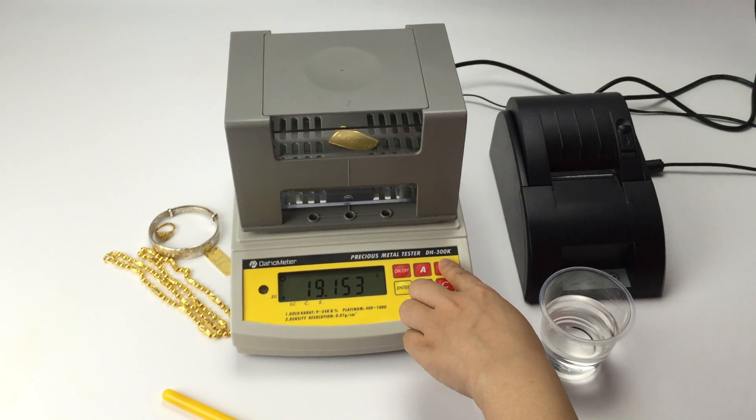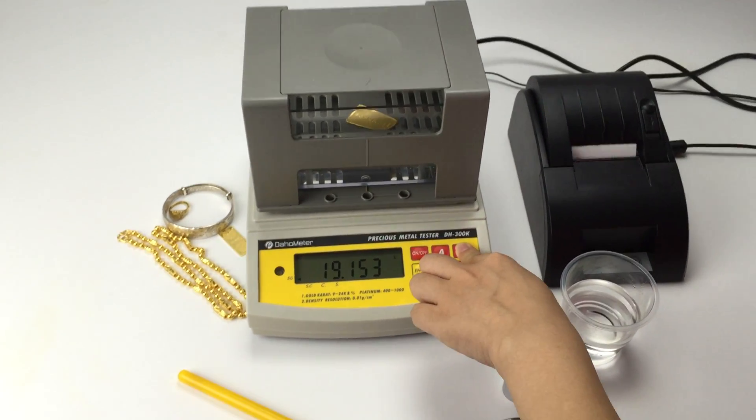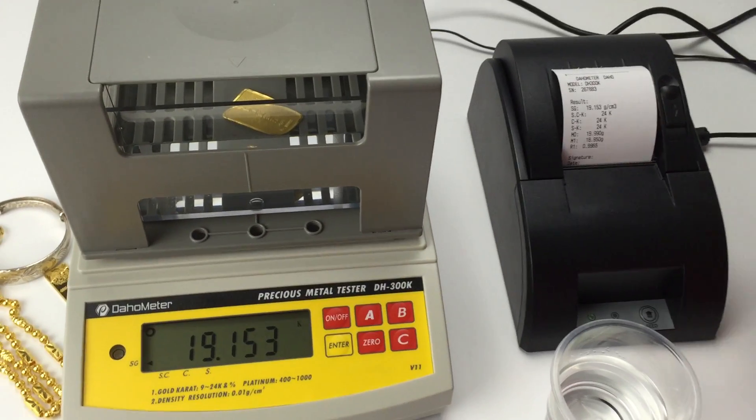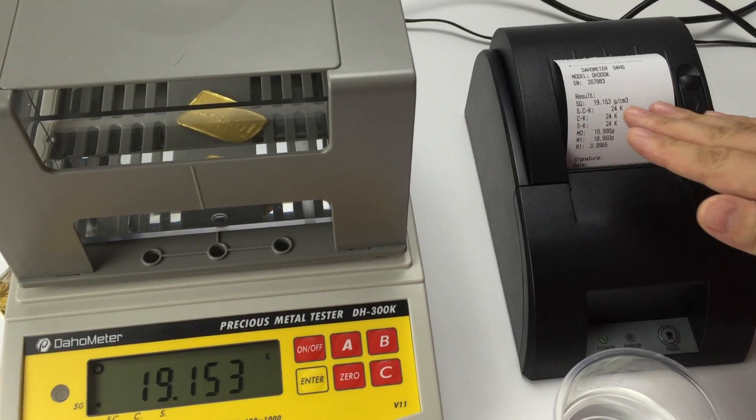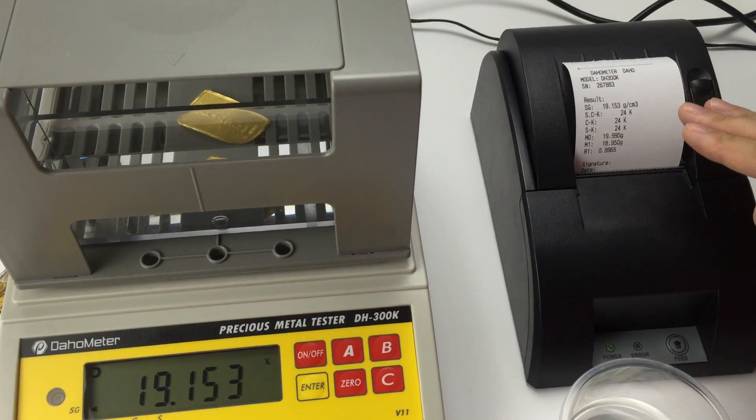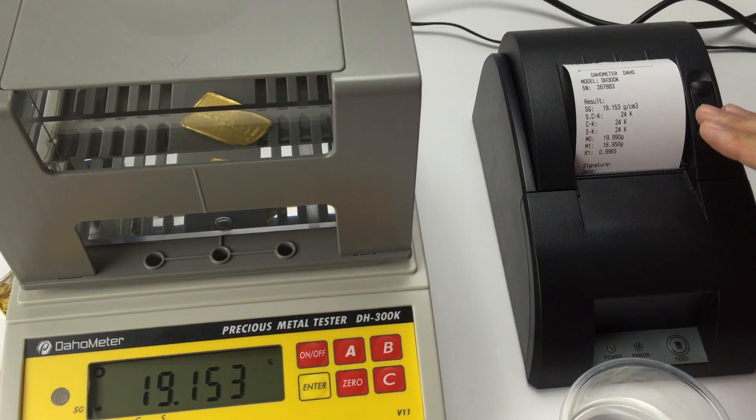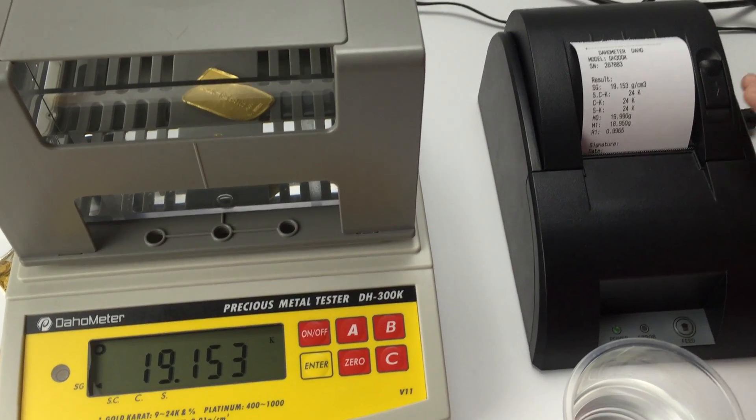And then press B to print data. The first data is SG, specific gravity. It is the density for this sample.